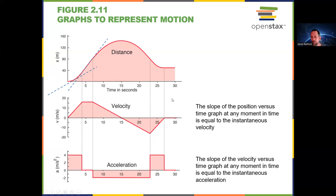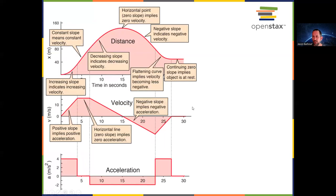There are lots of examples here of how you can use the slope of the position graph to figure out velocity, and the slope of the velocity graph to figure out acceleration. This next slide has a lot on it — if you'd like, pause the video and take a look to help your understanding.